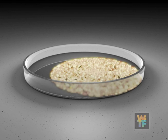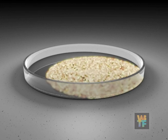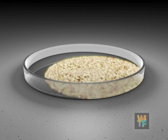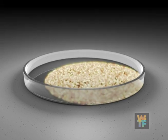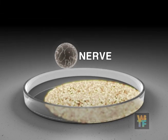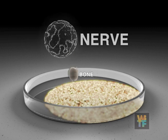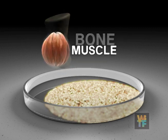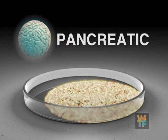By adding different growth factors, it's possible to change these embryonic stem cells into different cell types, such as nerve, bone, muscle, and pancreatic.